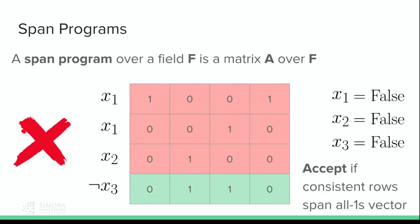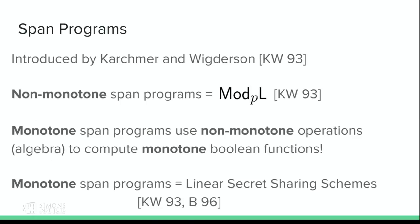This is a pretty elegant sort of program, but it's a little strange to think about what. It's natural to wonder how they relate to other circuit models in the literature. It was introduced by Karchmer and Wigderson in '93. Non-monotone span programs over GF(p) turn out to correspond to mod-p-L, or in the case of GF(2), just parity-L — checking whether a branching program has an odd number of accepting paths. But monotone span programs are actually a very interesting model because they use non-monotone operations to compute monotone Boolean functions, making them sort of intractable to deal with when proving lower bounds.